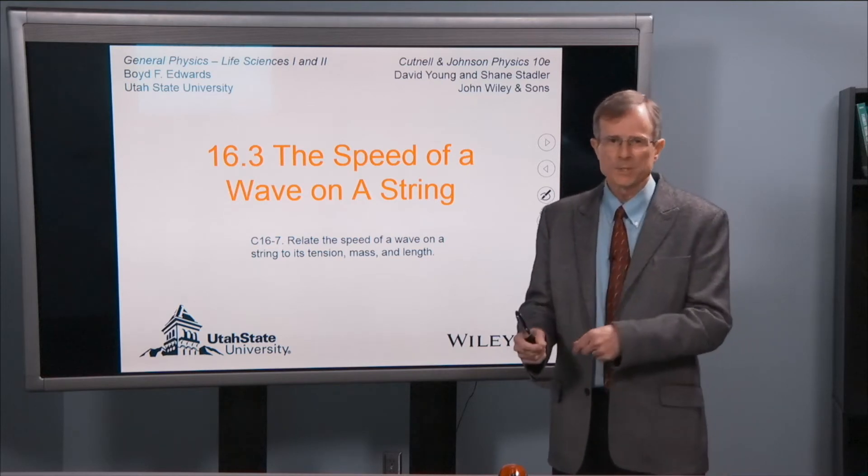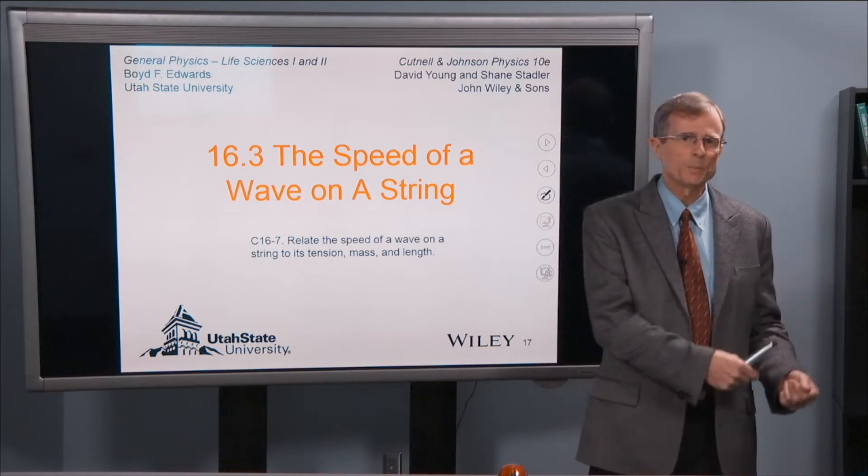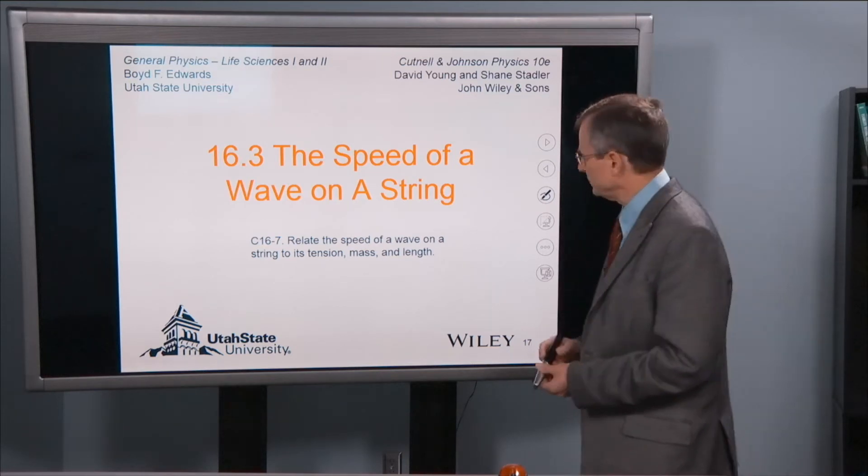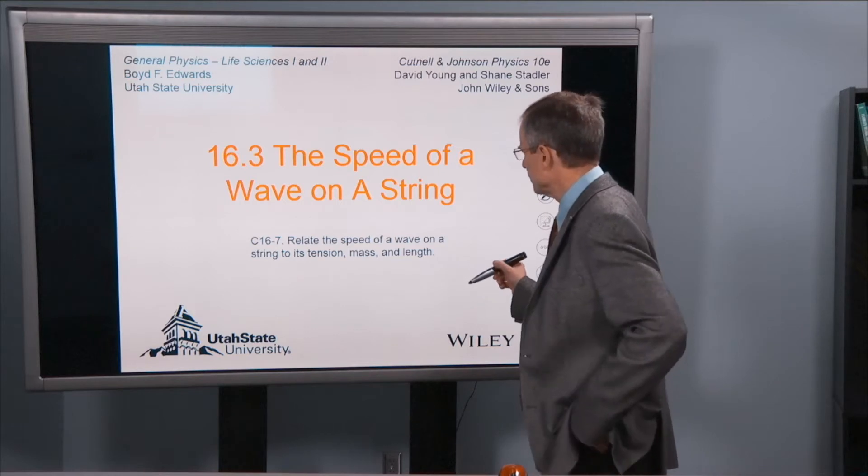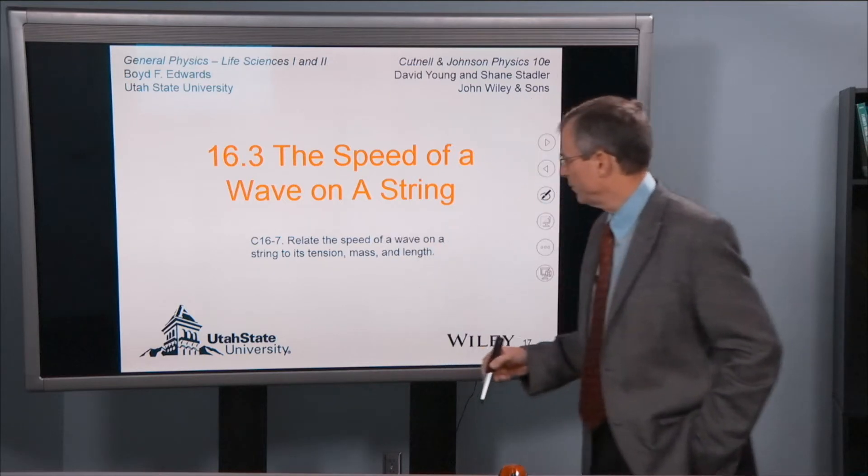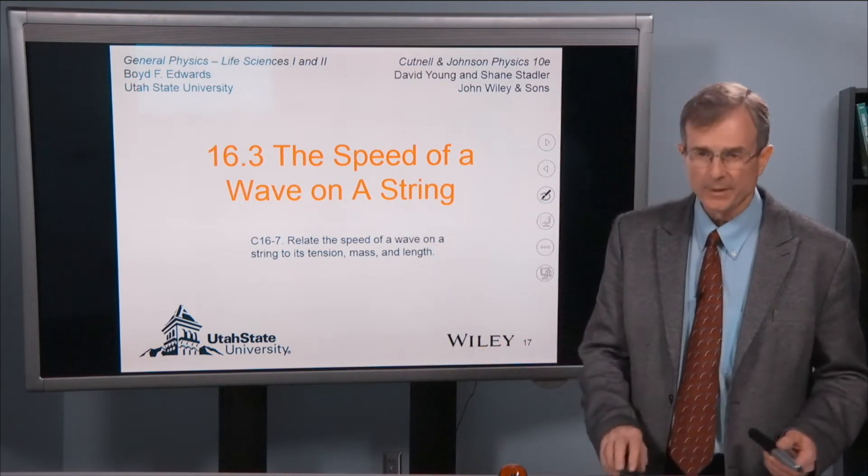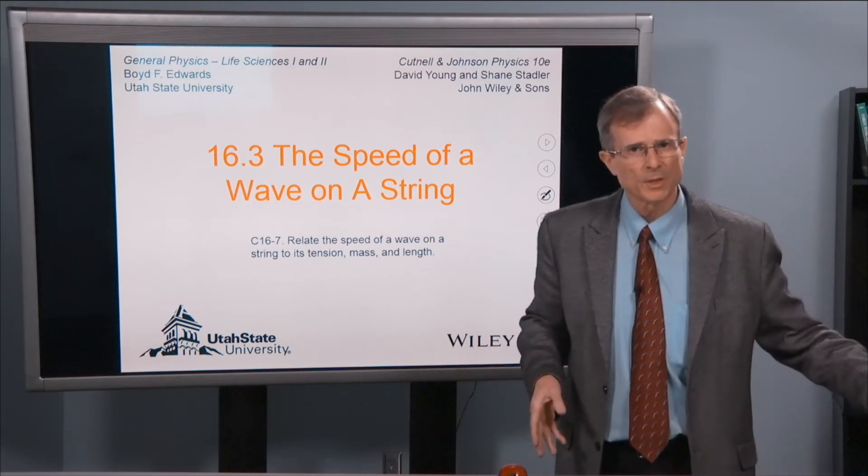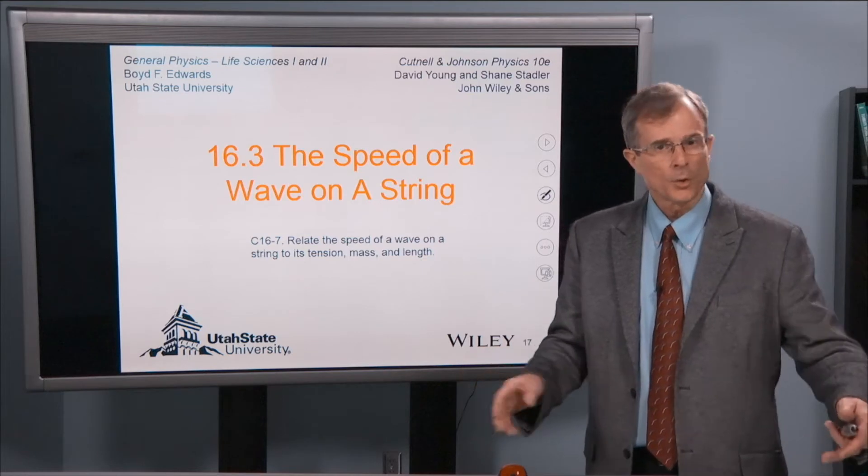And that frequency change comes about because the speed of the wave is changing. So we just have one concept in this section and that's to relate the speed of the wave to its tension, mass, and length. A heavier string, a heavier piano string at the same tension as a lighter string is going to give a lower sound.